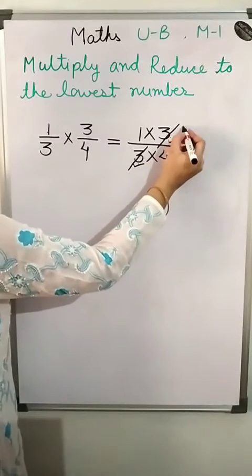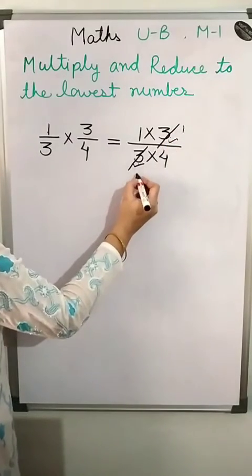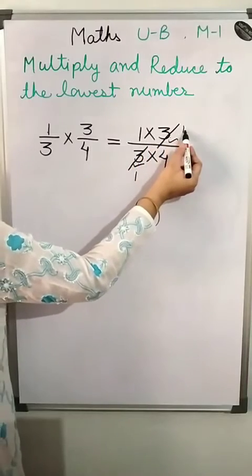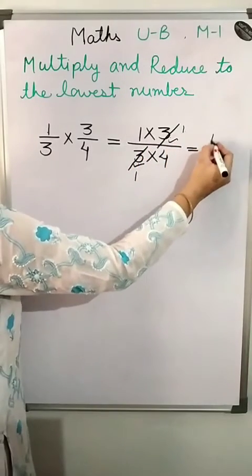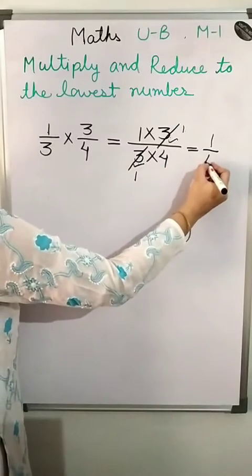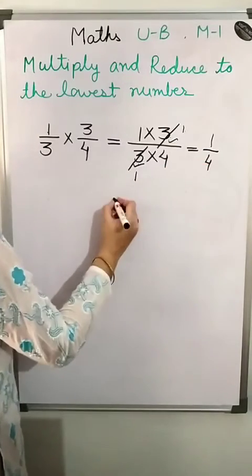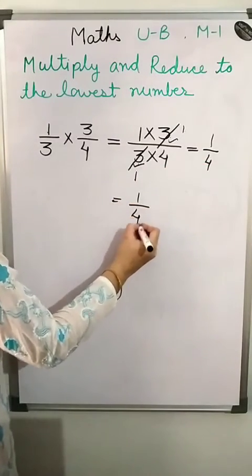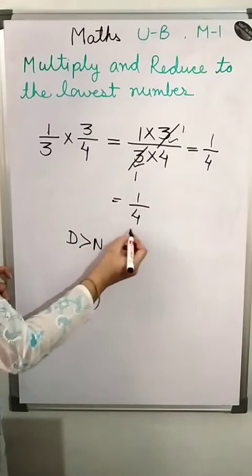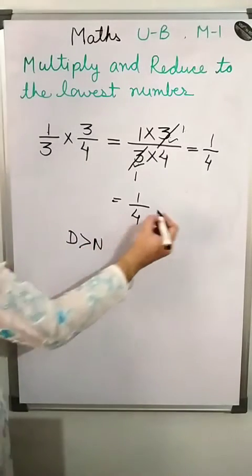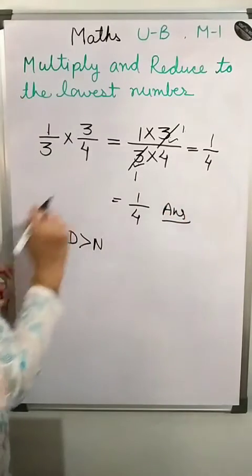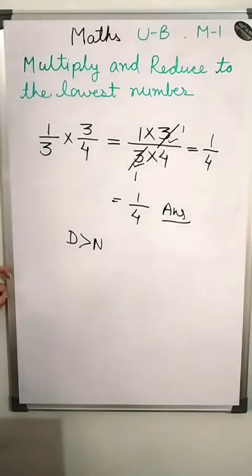3 ones are 3 and 3 ones are 3, so they cancel. What is left? 1 multiplied by 1 is 1, and 1 multiplied by 4 is 4. The answer is 1 upon 4. Again the denominator is greater than the numerator, so it is a proper fraction — no need to convert to a mixed fraction.